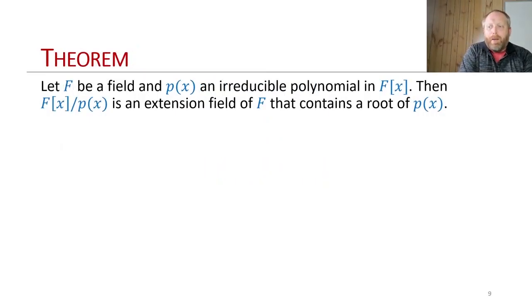Let F be a field and p(x) an irreducible polynomial in F[x]. We're starting off with something that's irreducible in F[x]. Then we create the extension field F[x]/p(x). This is an extension field of F, and now it's going to contain a root of p(x). This is what we're going to prove.